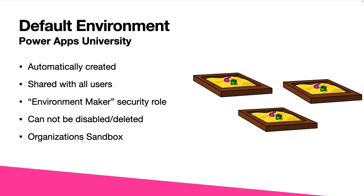First up, the default environment is something that every organization that leverages Power Apps will have. It is automatically created — you can't get rid of it and you can't get around it. How the default environment works with users is that everyone is assigned the environment maker security role, which gives everyone that has a Power Apps license access to come into the default environment, use connections, build Power Apps, and build Power Automate flows.